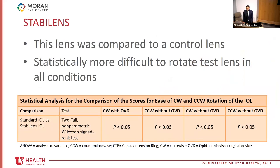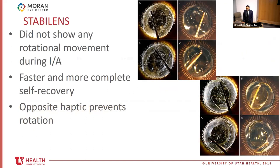In the cadaver eye study, the Stable Lens was statistically more difficult to rotate than a standard Alcon toric lens in all conditions — both clockwise and counterclockwise, with and without OVD. Additionally, the test lens showed no rotation when removing OVD, whereas the control lens showed rotation during that surgical step. The test lens also showed quicker and more central self-correction after experimental tilt and decentration, largely due to the four arcuate haptics opposing one another to create a counter force.